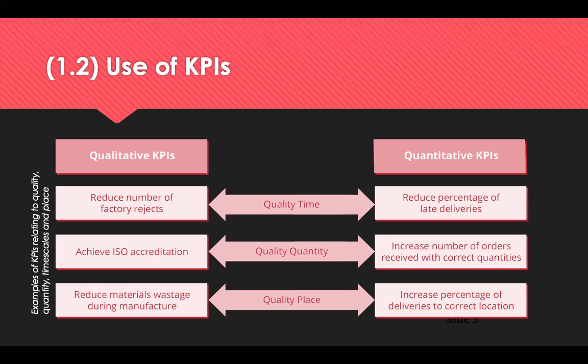Examples of qualitative KPIs may include reducing the number of factory rejects and reducing material wastage during manufacture. Quantitative KPIs could include reducing the percentage of late deliveries, ensuring orders are received with correct quantities, and increasing the percentage of deliveries to the correct location. KPIs should be assessed regularly and the supplier's performance discussed at review meetings. Have a think about some of the KPIs your organisation has with its suppliers — what do these tell you about what's important to your organisation?